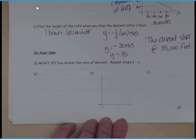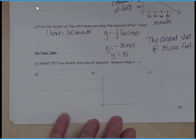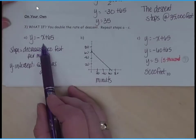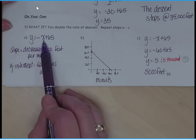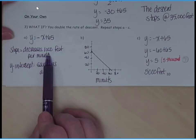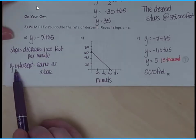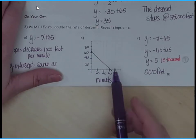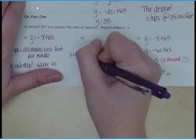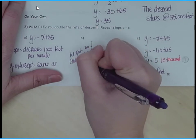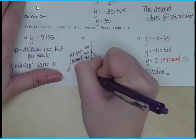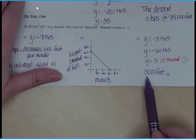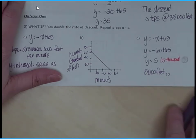All right, go ahead on your own. What if you double the rate of descent? So repeat step A through C to come up. Hit pause and come back when you're finished. All right, so we have y equals negative x, because we doubled a half, plus 65. So the slope decreases 1,000 feet per minute. The y-intercept, that's going to be the same as above. So I've got my graph here, except I forgot to label height in thousands of feet. And then for C, I got y equals 5. But remember, that's in thousands of feet. So that's 5,000 feet.